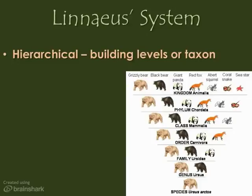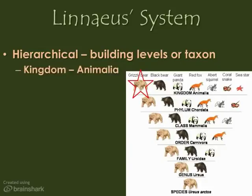Hierarchical comes from the word hierarchy, or levels. Each level is called a taxon. So if I ask you what taxon or taxonomic group you're talking about, you think of what level. Let's take a look at these taxa or levels. We're going to follow the path of the grizzly bear as we go through this. It's a member of the kingdom Animalia.